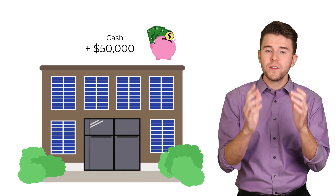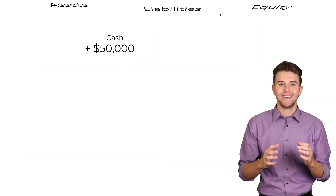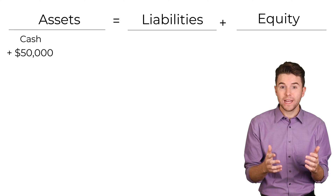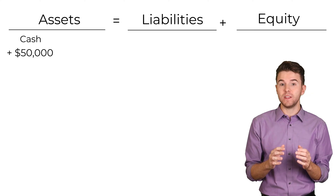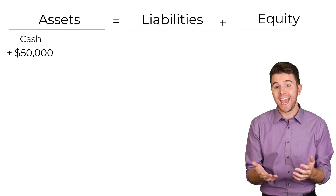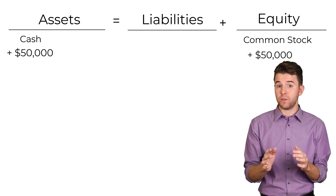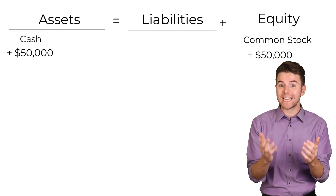For example, let's assume a business is just starting out and the owner invests $50,000 cash in the business. Analyzing this transaction using the accounting equation, we see that assets increase $50,000 because of the increase in cash and equity increases $50,000 because of the increase in common stock.